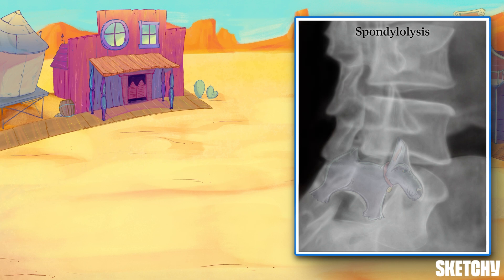The fracture line extends through the part of the vertebra called the pars interarticularis, which is shown here. So if you see a lumbar spine x-ray with something that looks like a Scotty dog with a collar on, then you're dealing with spondylolysis.